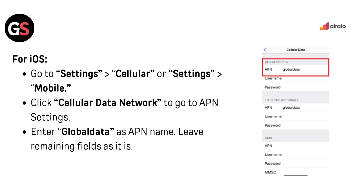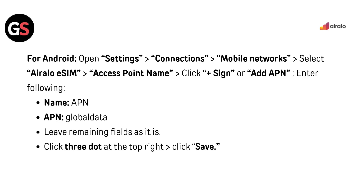For iOS APN settings: go to Settings, then Cellular or Settings then Mobile. Click 'Cellular Data Network' to go to APN settings. Enter 'global' as the APN name and leave the remaining fields as they are.